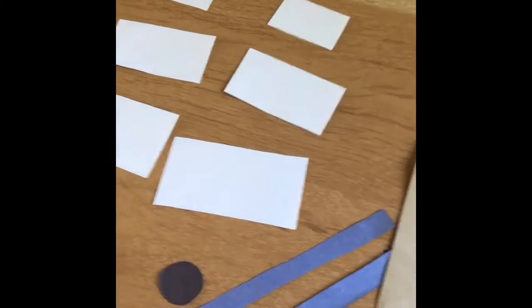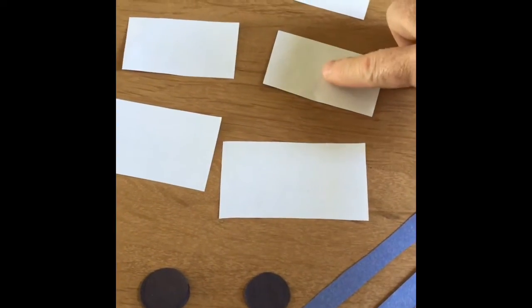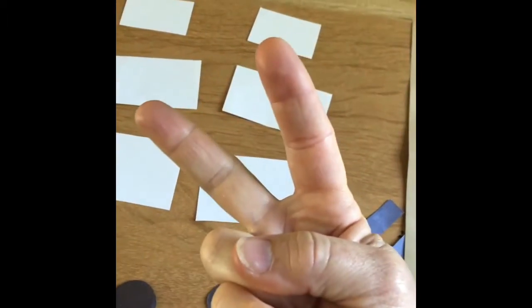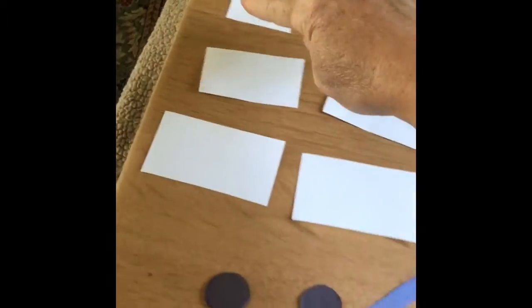So to make our pirate ship you're going to need a small, medium, and large rectangle. Two sets. Small, medium, large.